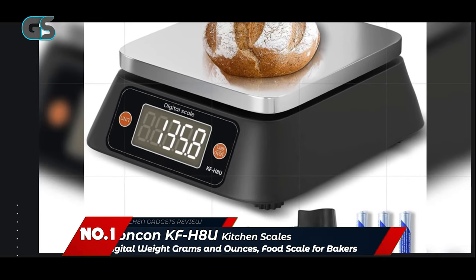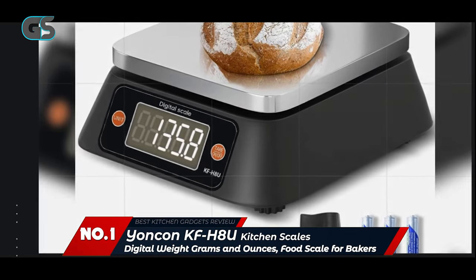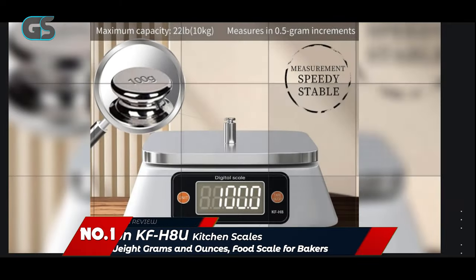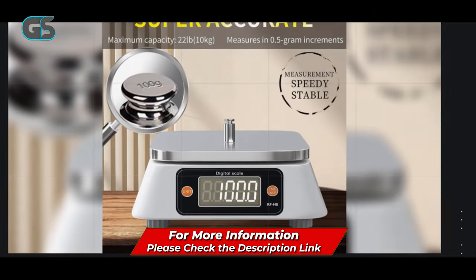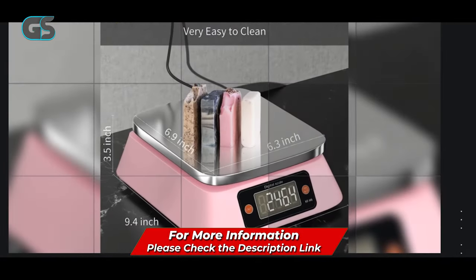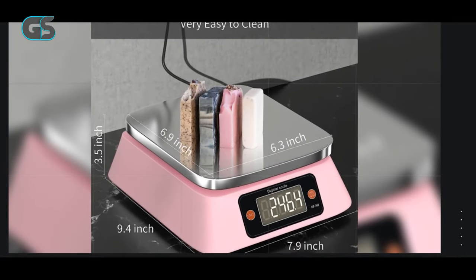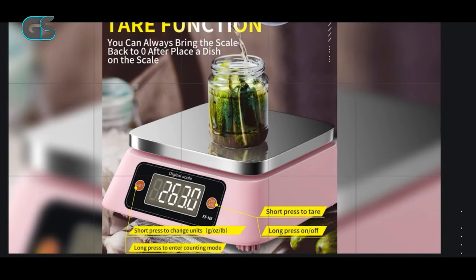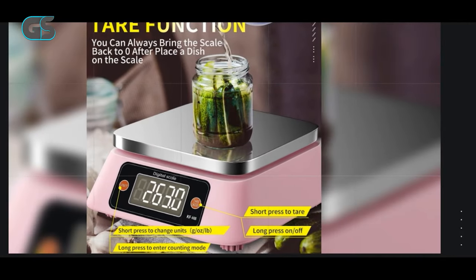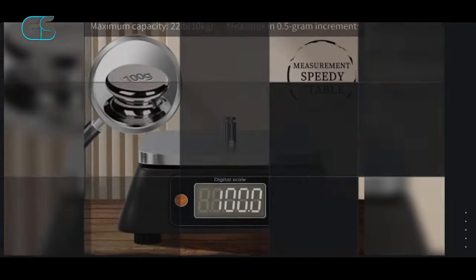Number 1. Yonkin KFH8U Kitchen Scale's Digital Weight Grams and Ounces, Food Scale for Bakers. The Yonkin KFH8U Digital Kitchen Scale is a true gem for bakers, crafters, and anyone seeking precision in their measurements. This multifunctional scale delivers on all fronts, offering accuracy, versatility, and a thoughtful design that caters to various needs.